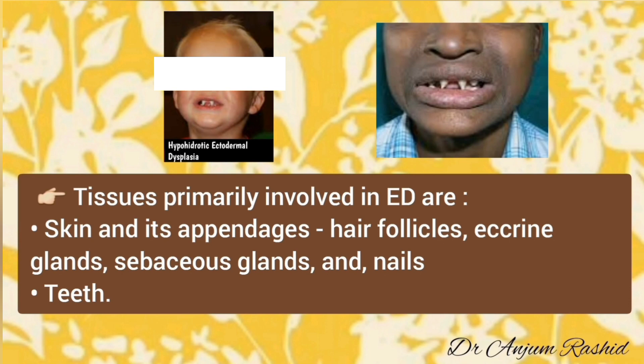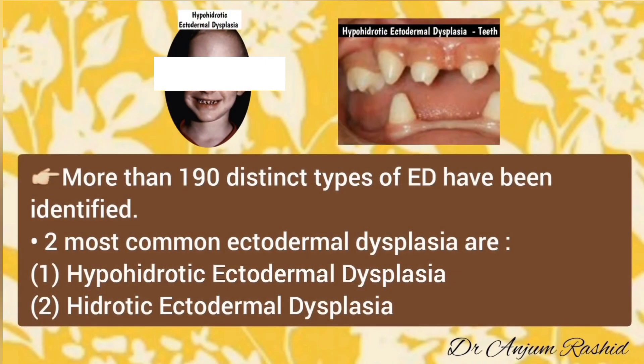Tissues primarily involved in ectodermal dysplasia include skin and appendages such as hair follicles, eccrine glands (sweat glands), sebaceous glands, and nails. Another tissue affected is the teeth. There are more than 190 distinct types of ectodermal dysplasia, but the two most common types are hypohydrotic ectodermal dysplasia and hydrotic ectodermal dysplasia.